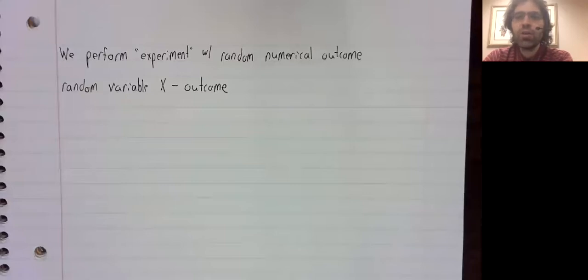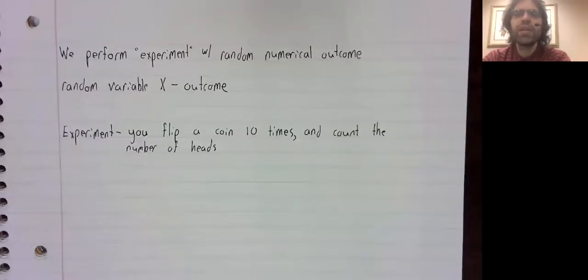It could be the kind of random artificial process that you see in casinos, for example. You flip a coin 10 times and count the number of heads. But it also includes more naturalistic examples.